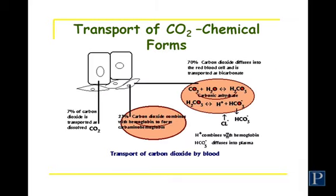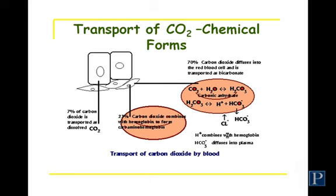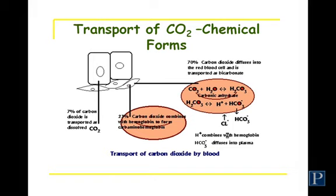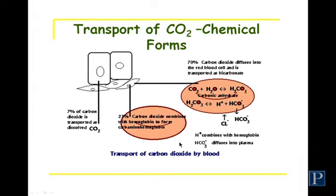Carbon dioxide, like oxygen, is transported in forms other than physically dissolved in plasma. But unlike oxygen, carbon dioxide is transported three different ways, while oxygen is transported two different ways. About seven percent of carbon dioxide is transported physically dissolved in plasma. Then some of the carbon dioxide combines directly with the hemoglobin molecule to form carbaminohemoglobin — that's about 23 percent.